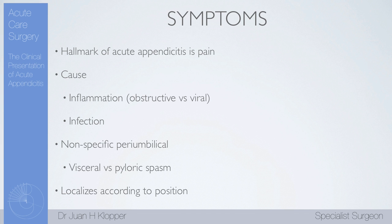Eventually, as this inflammation and infection spreads, it is going to start affecting the peritoneum — the parietal peritoneum — which has somatic nerve supply, meaning you will be able to localize that pain. For most of us, our appendix is in the right lower quadrant, so we localize this pain there. But not everyone is the same. Some people might have malrotation, or their appendices in different locations. A retrocecal appendix can be buried deep in the retroperitoneal space so that infection has to be overt before you start getting lateral pain as it touches the peritoneum in the right flank.